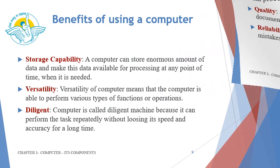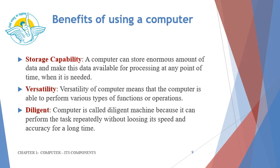Storage capability is another benefit of using a computer. A computer can store an enormous amount of data and make this data available for processing at any point of time when it is needed. Versatility of a computer means that the computer is able to perform various types of functions or operations, and that is the reason computers are used practically in every field these days. Diligence — a computer is called a diligent machine because it can perform tasks repeatedly without losing its speed and accuracy for a long time. Unlike humans, it doesn't have to go for a coffee or tea break.